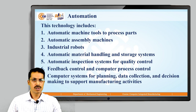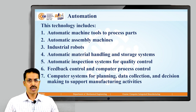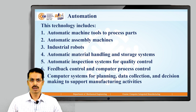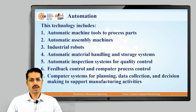What does automation include? First is automatic machine tools to process parts — the different machine tools used for processing a particular component. Next are automatic assembly machines. After processing individual parts, if we want to assemble all the different parts into a final product, we can use automatic assembly machines.